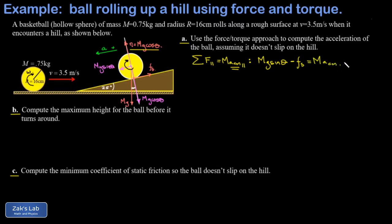For the torque analysis, the sum of all torques about the center of mass equals the moment of inertia times angular acceleration. Only the friction force exerts a torque. Gravity acts at the center of mass giving a lever arm of zero, so its torque is zero. The normal force is aimed through the center of mass, so its torque is also zero. Only the static friction force contributes, acting through lever arm R.